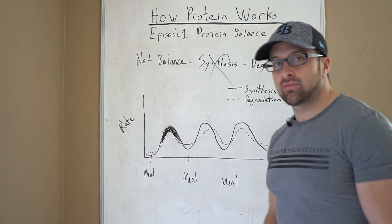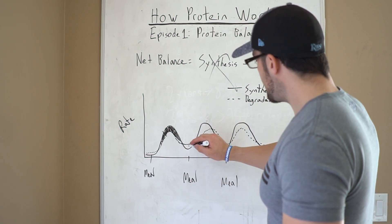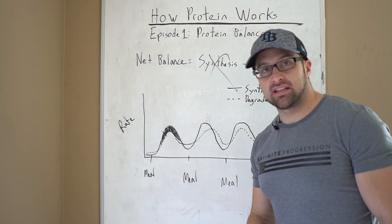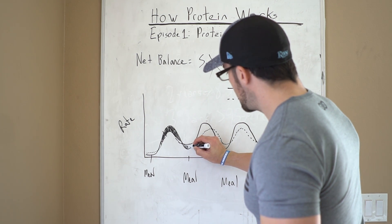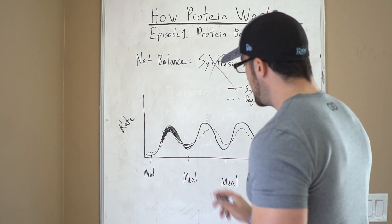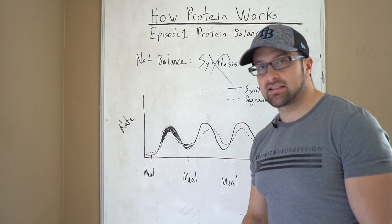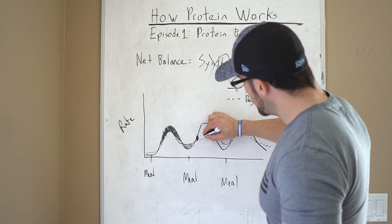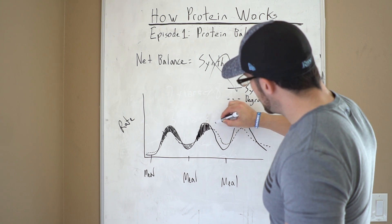As you go into post absorptive, as synthesis starts to fall off, you see that degradation now starts to exceed synthesis. So now you have this area here. And that is catabolic because degradation is exceeding synthesis. Eat another meal. It goes back up. And this process continues throughout the day.